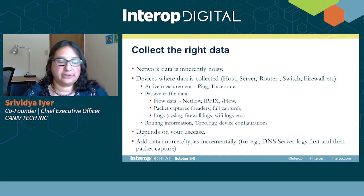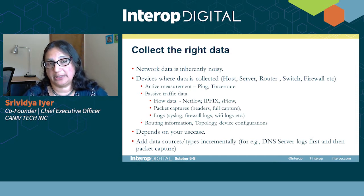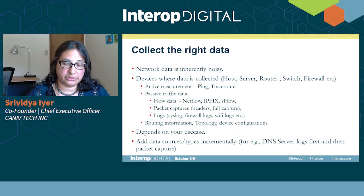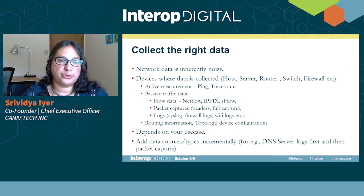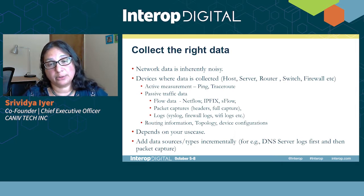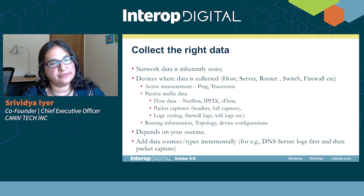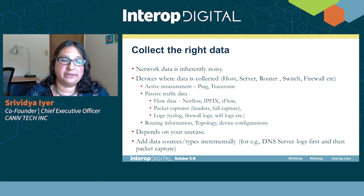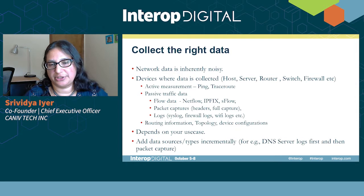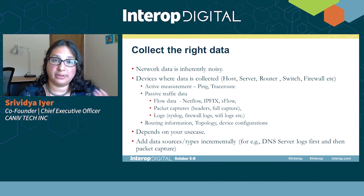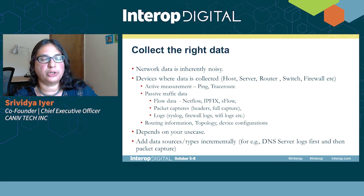You can collect data from a host, server, or router. You can do active measurement data like ping or trace route, though we primarily do passive collection. Passive data includes flow data, packet captures, and logs. You can also collect routing information, topology, and device configurations. All of this depends on what you're trying to do — remember, the problem you have defined dictates what type of data you collect.